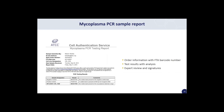Here's a sample of a mycoplasma PCR testing report. It contains all order information including the FTA barcode number, customer name and organization, cell line name, and processing dates. The report gives information on the testing service and includes a table of results for controls and the submitted sample. Test results are explained with additional biologist comments if needed, and reports are always reviewed and signed by two experts to confirm results.